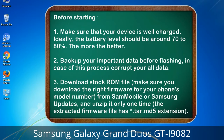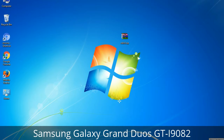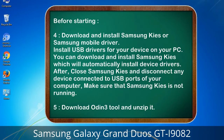3. Download the stock ROM file. Make sure you download the right firmware for your phone's model number from Sammobile or Samsung Updates, and unzip it only one time. The extracted firmware file has a *.tar.md5 extension. 4. Download and install Samsung KIES or Samsung mobile driver to install USB drivers for your device on your PC. You can download and install Samsung KIES which will automatically install device drivers. After that, close Samsung KIES and disconnect any device connected to the USB ports of your computer. Make sure that Samsung KIES is not running.